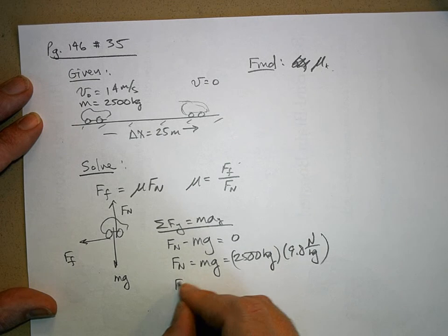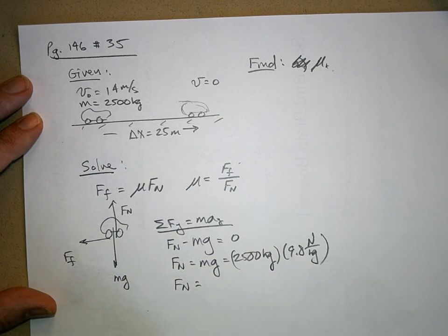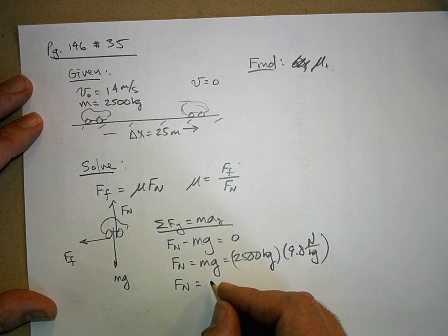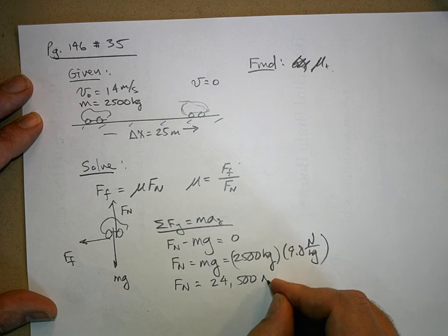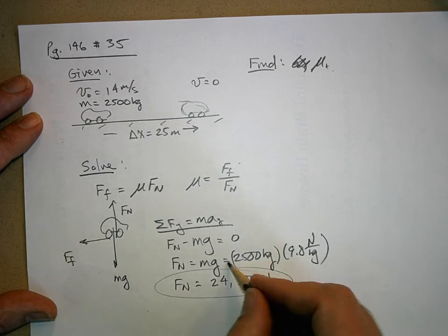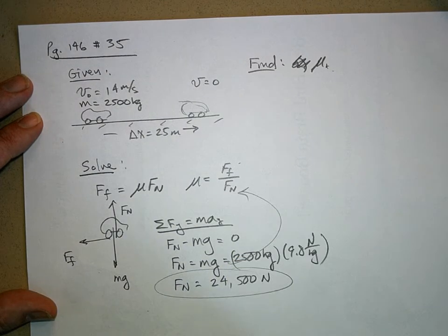So the normal force is equal to mg, that's 2,500 kilograms times 9.8 newtons per kilogram. What does this equal? 24,500 newtons. So there's my normal force that I'm going to put in there to figure out my coefficient of friction.